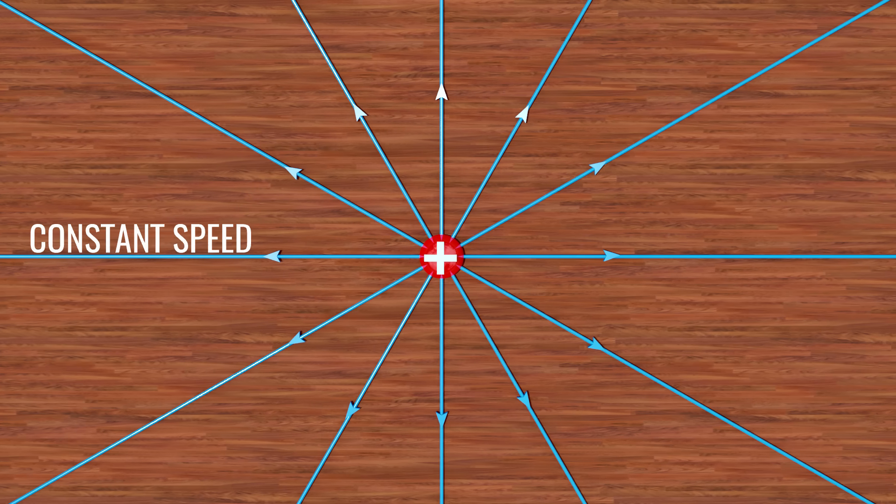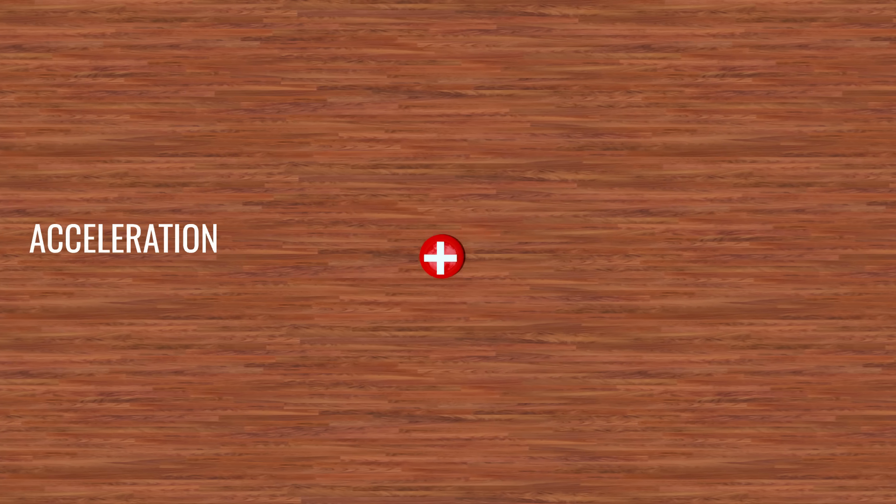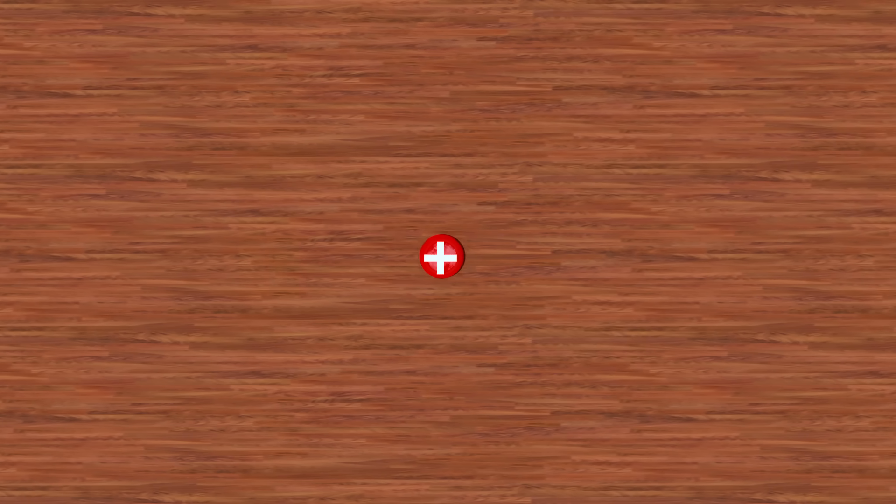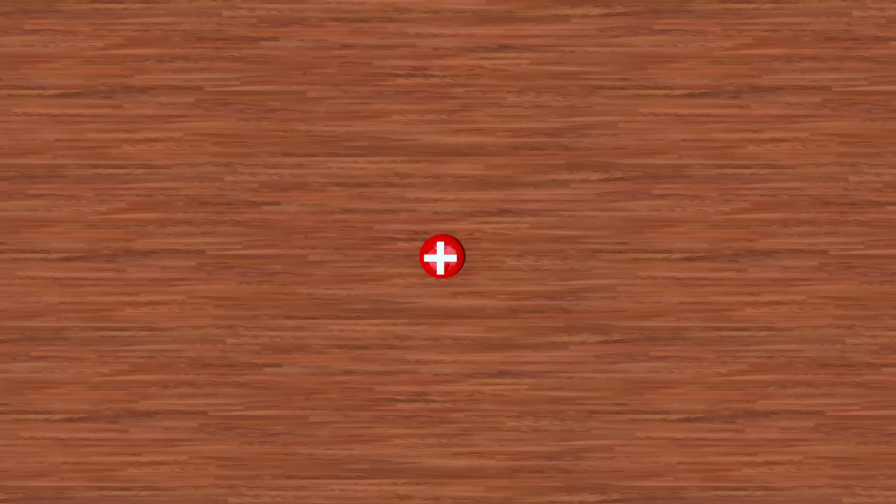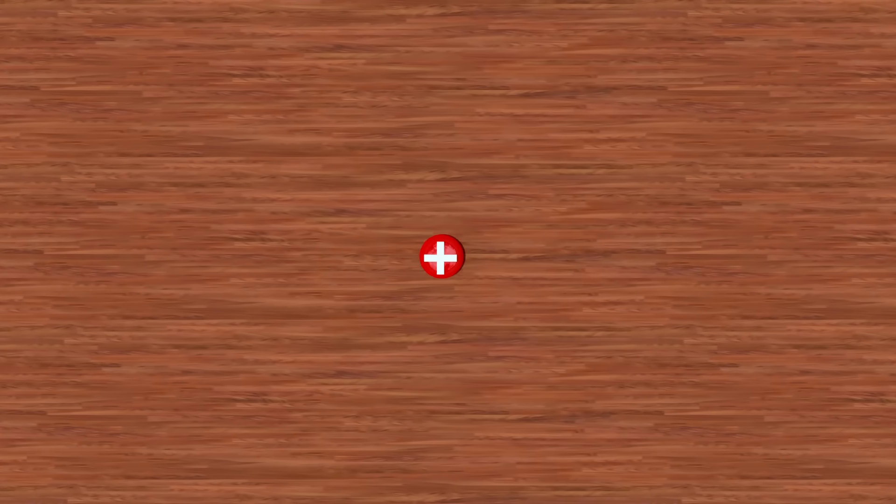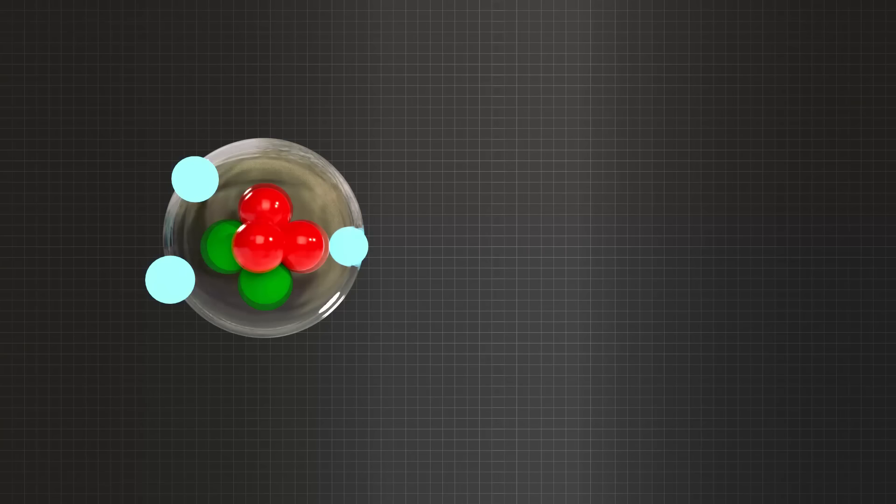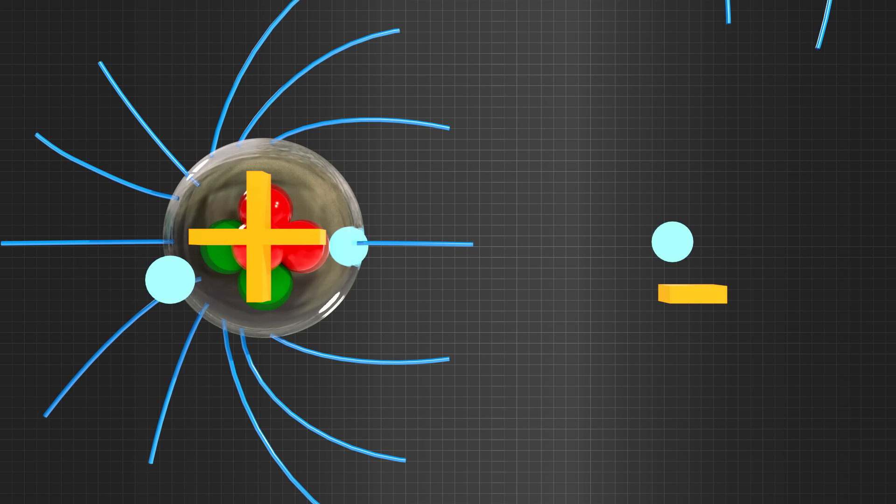Now, imagine for a fraction of a second it accelerates. After that, it continues its uniform motion at a higher speed. What we need to understand is the effect of this acceleration on the electric field. The interesting thing is that the information does not travel at an infinite speed. Instead, it travels at the speed of light.